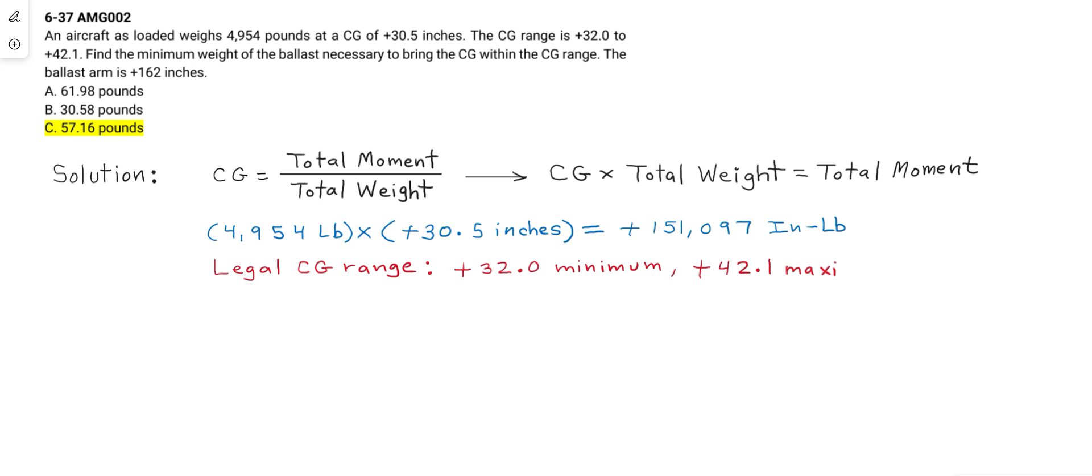The legal CG range is specified at positive 32.0 minimum to positive 42.1 maximum. Because we're computing the minimum ballast weight, we access the minimum CG position of positive 32.0.